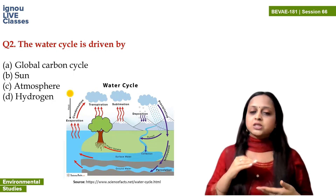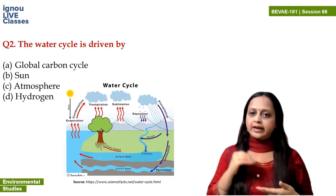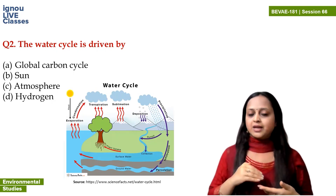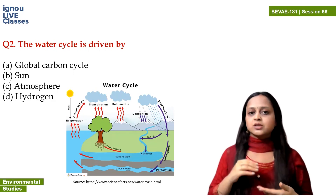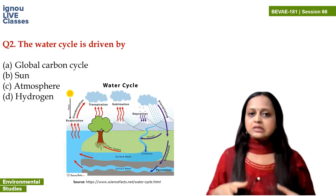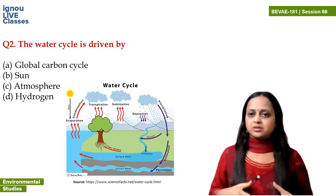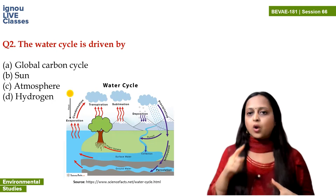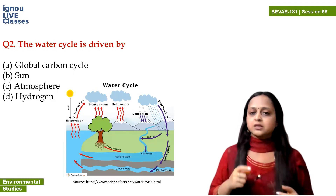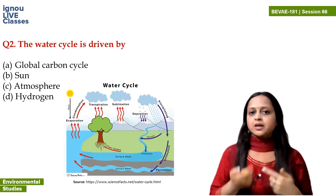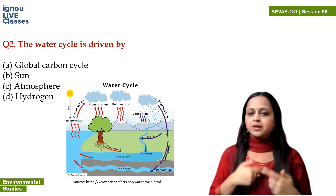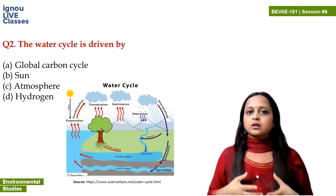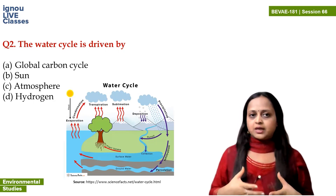Deposition is when vapors directly convert into ice without going through the liquid state. These are all the processes in the water cycle that keep water in a continuous cycle — water falls on Earth and evaporates back again. So this is the water cycle. What ultimately drives the water cycle?